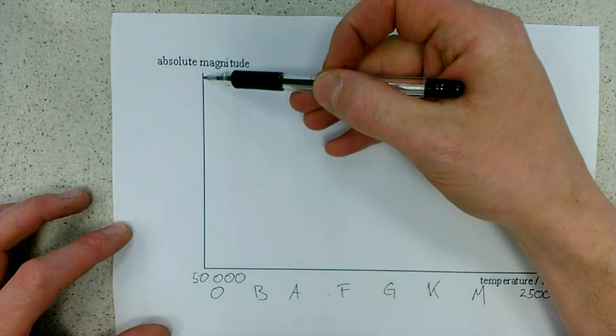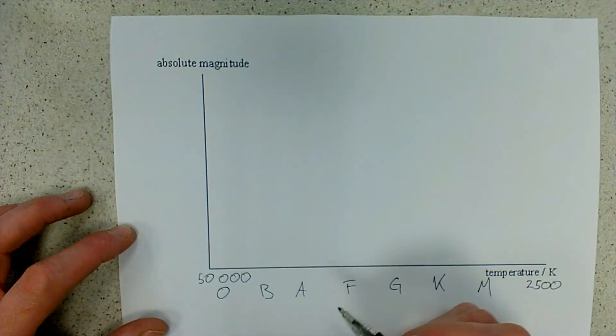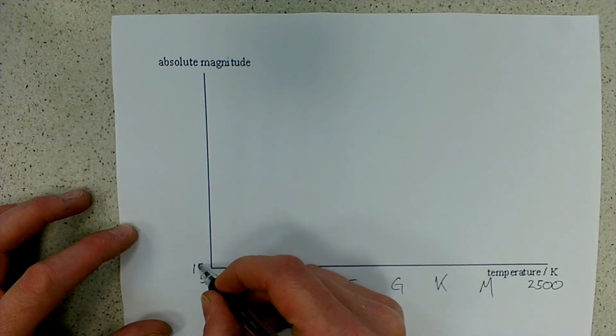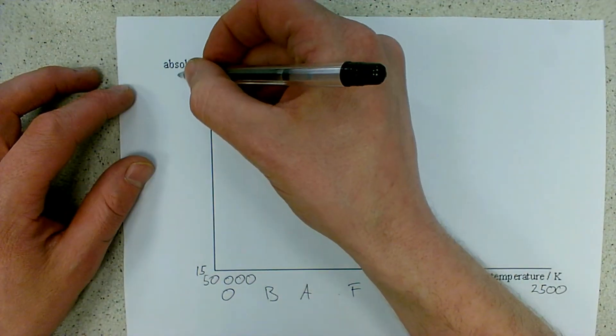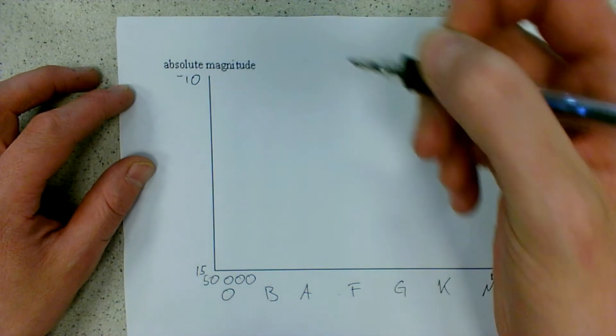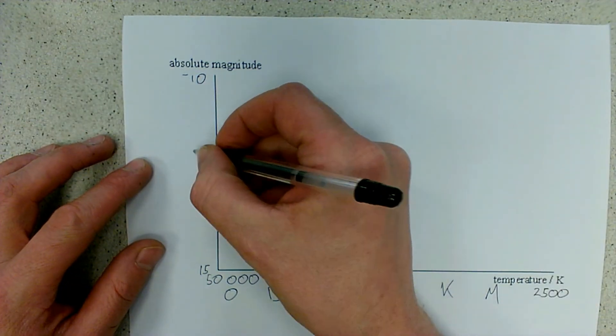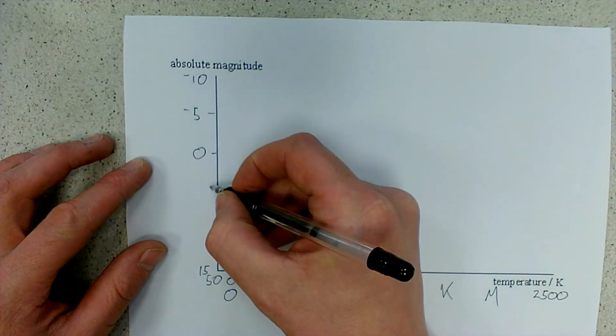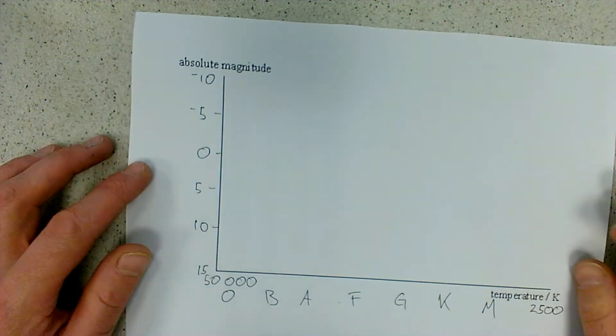We need to now make sure we put absolute magnitude up on this axis. We would put the dimmest magnitude here at the bottom, so we'd be expected of the magnitude of around about 15 at the bottom and the brightest magnitude would go at the top, so the magnitude of minus 10. The magnitude of zero would be around about here and then we can see we split it up into the subdivisions, five and ten.